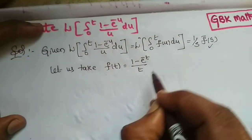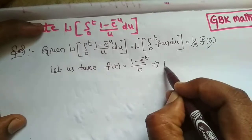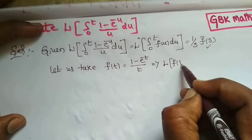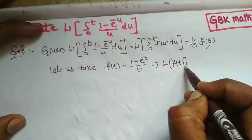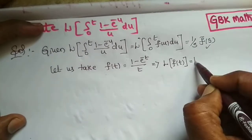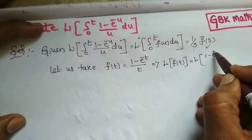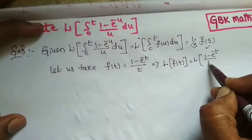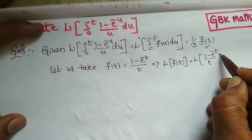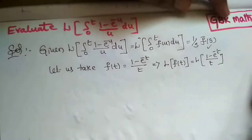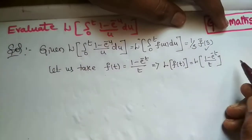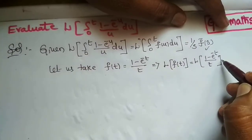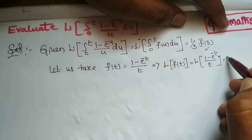Applying Laplace transformation on both sides: L{f(t)} = L{(1 - e^(-t))/t}. We cannot get the Laplace transformation directly. Again, this is in the form of division by t.